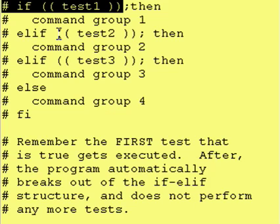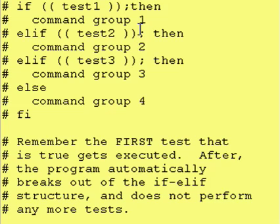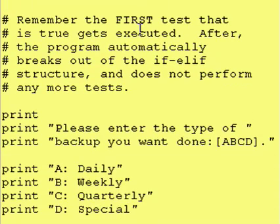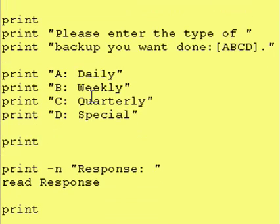Two things I want to point out here: this else portion only gets executed if all of the previous tests come out false. And the other thing is that the first test that gets validated as true is the last test that gets executed. The Corn Shell will not go into any of the else if tests after that — the first test that comes out true is the last one executed, and the program automatically breaks out of the if-else-if structure and does not perform any more tests.